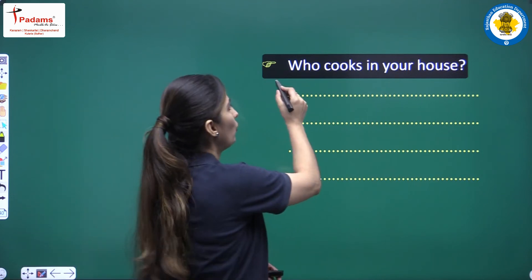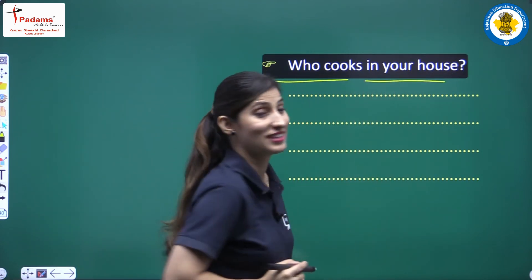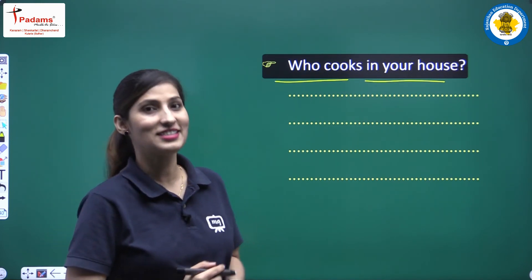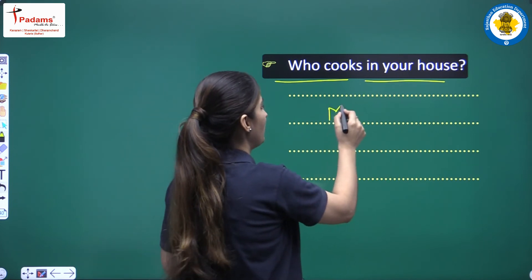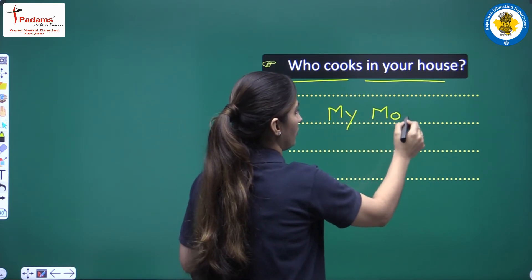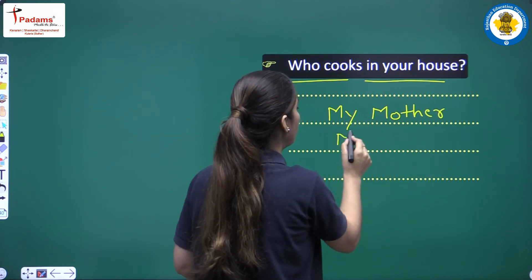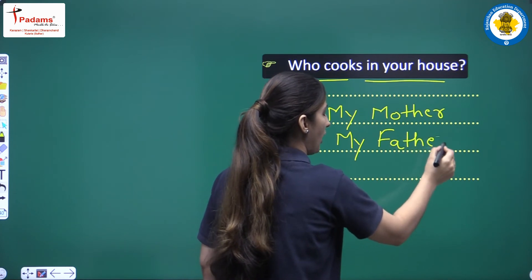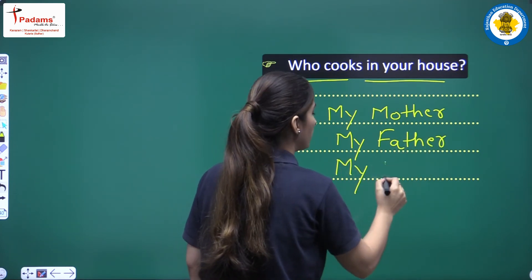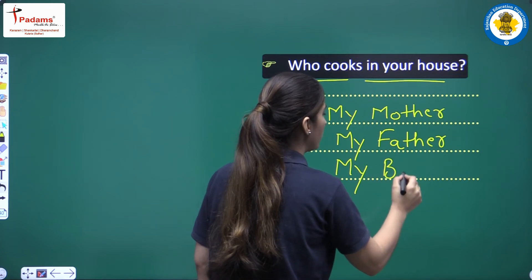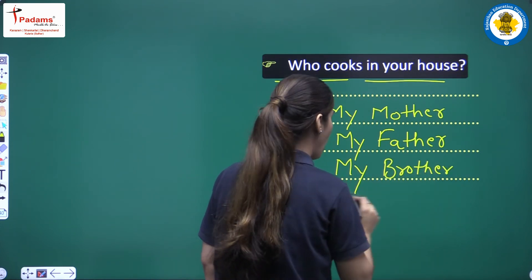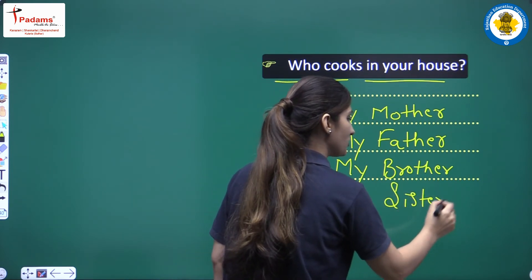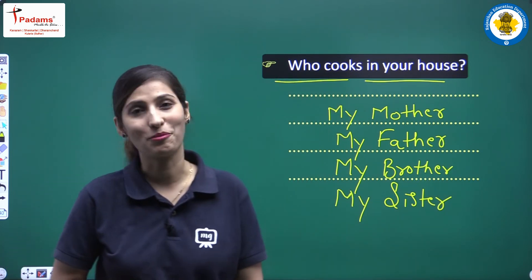Our next question is: who cooks in your house? We are talking about your house — aapke ghar mein khana kaun banata hai? You can write 'my mother,' 'my father,' 'my brother,' or 'my sister.' Whoever cooks food in your house, write their name here.